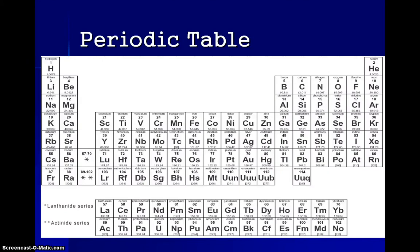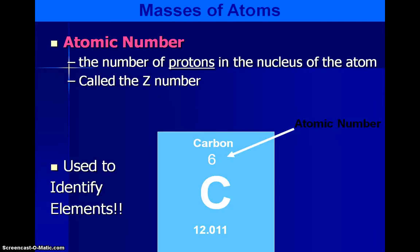So all the elements are found on the periodic table, and each box on the periodic table gives us some information about those particular elements. So we've already learned to go from names to symbols, so now we're going to talk about what the numbers on the periodic table mean.